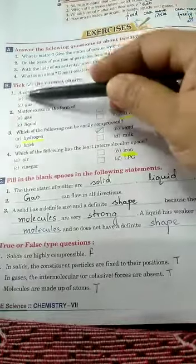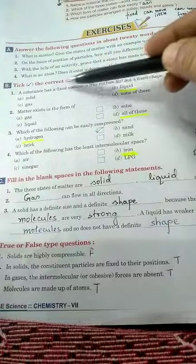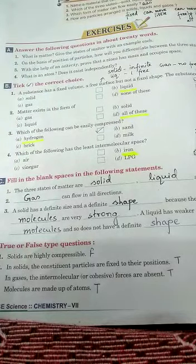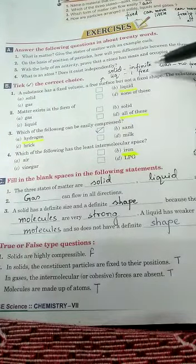We tick the correct choice. Number 1. A substance has a fixed volume, a free surface, but not a fixed shape. The substance is Option B, liquid.